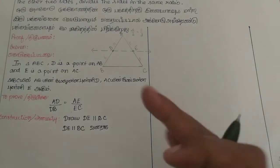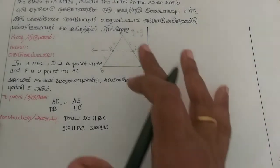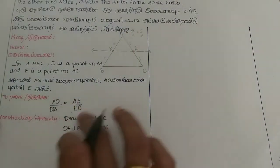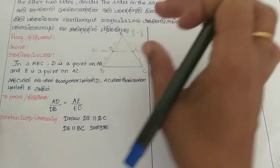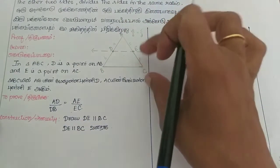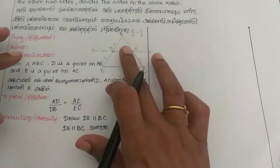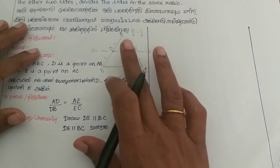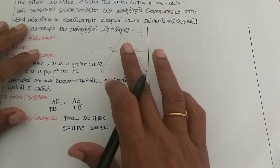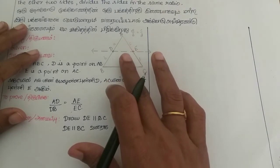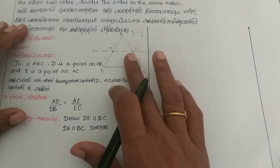Now we prove. How do we prove? We need to prove that AD/DB equals AE/EC.